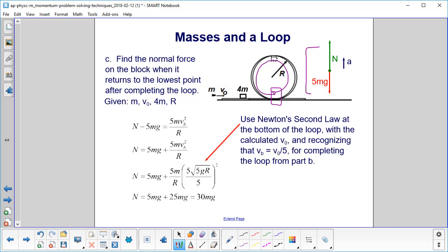We draw a free body diagram. We have 5mg pointing down, the normal pointing up. We express Newton's second law just like this and note the negative sign on the 5mg as it is opposite the direction of the acceleration.